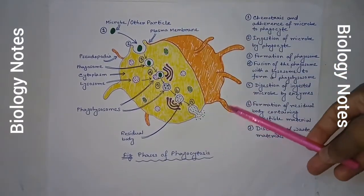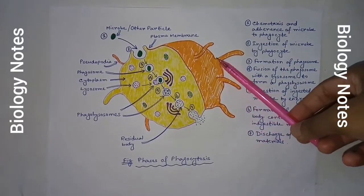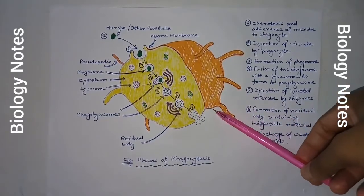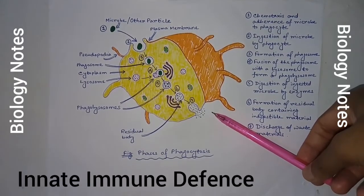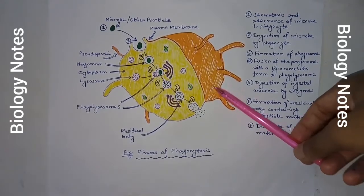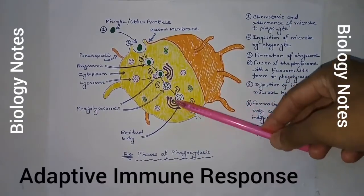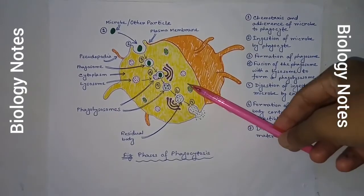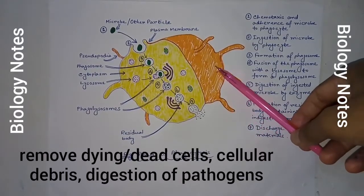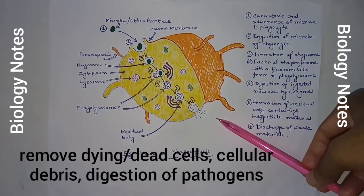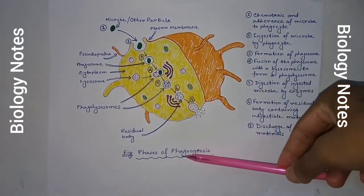This is a diagram showing how macrophages and other phagocytic cells help in the phagocytosis process. In immunology, phagocytosis is one of the main mechanisms of the innate immune defense. It is one of the first processes responding to infections and is also one of the initiating branches of an adaptive immune response. Macrophages are professional phagocytes, highly specialized in removal of dying or dead cells, cellular debris, and digestion of pathogens like bacteria and viruses, all by the mechanism of phagocytosis.